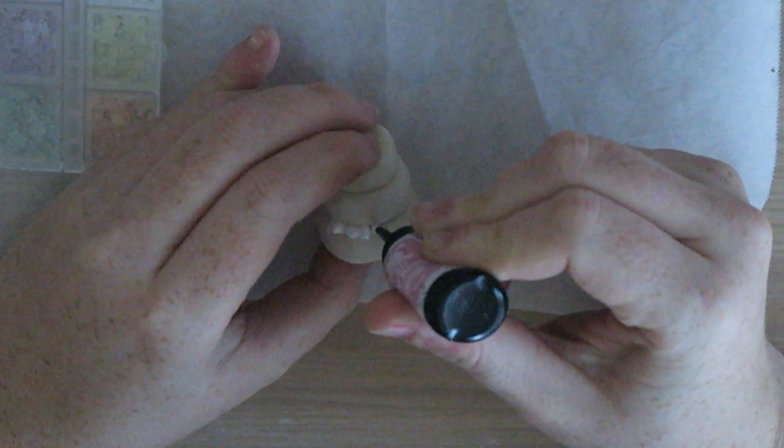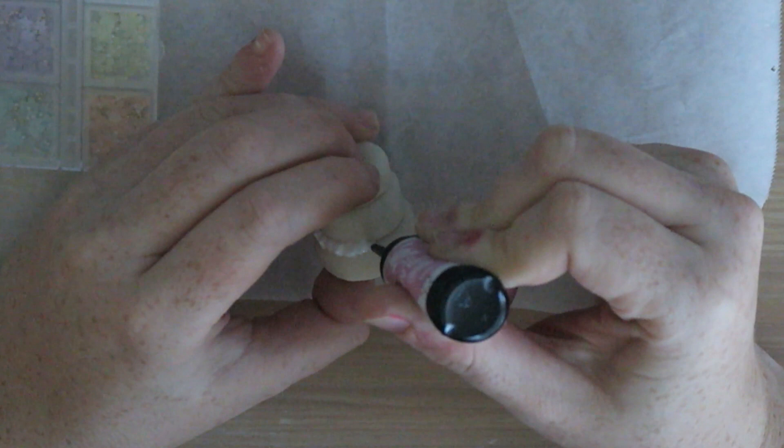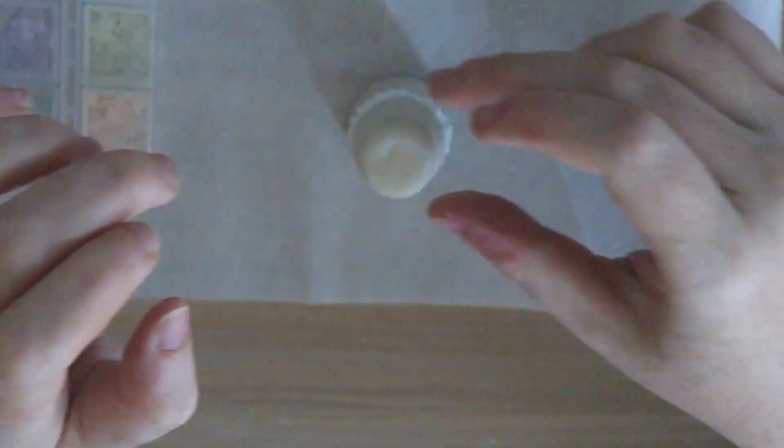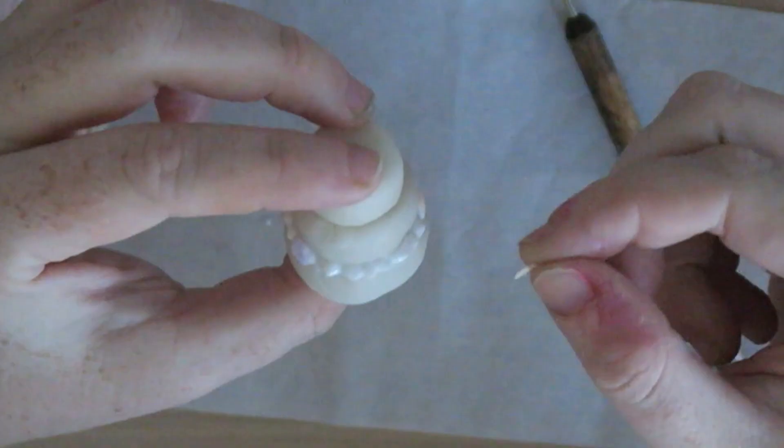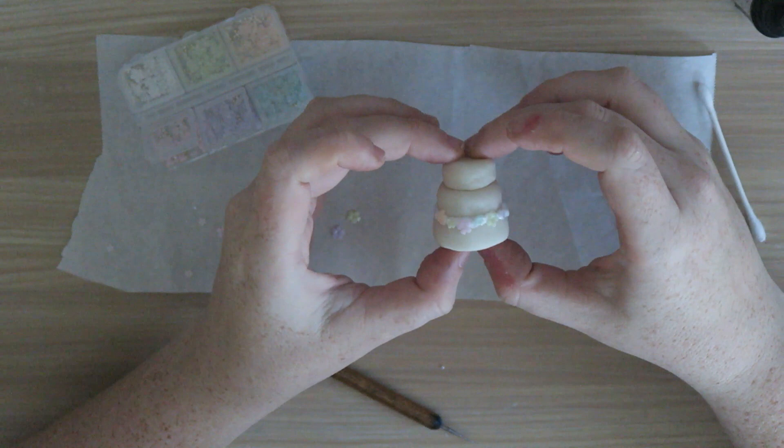So here I'm just kind of applying it like icing, kind of making some beads in between the different layers and then I will go in and add some of the flowers to it as well so the UV resin will also act as an adhesive.